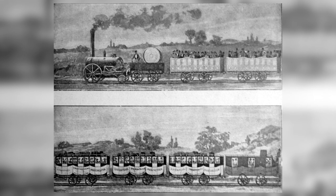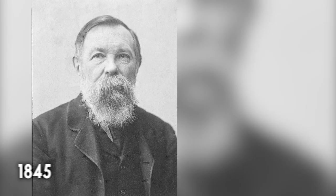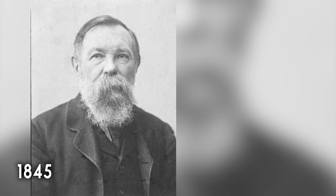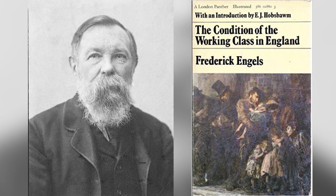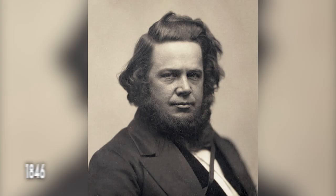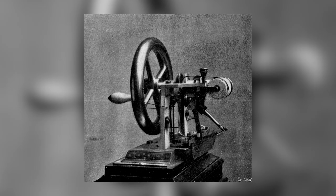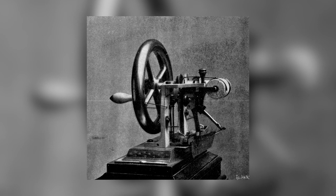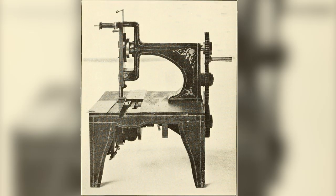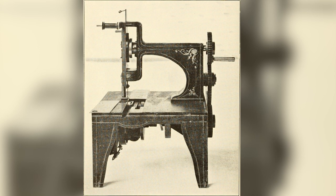1845, German philosopher Friedrich Engels published his book The Condition of the Working Class in England, which tackled the negative effects of industrialization. 1846, on September 10 of this year, Elias Howe was awarded the first US patent for a sewing machine using the lockstitch design. He wasn't the first to invent the sewing machine but he developed it, and his developments made him a sewing machine pioneer.